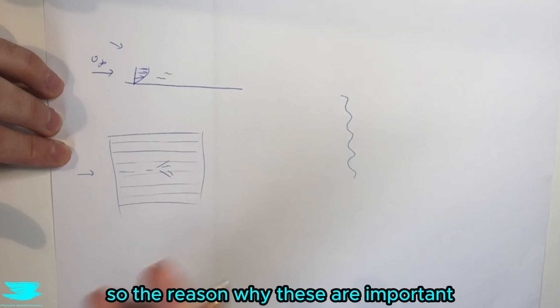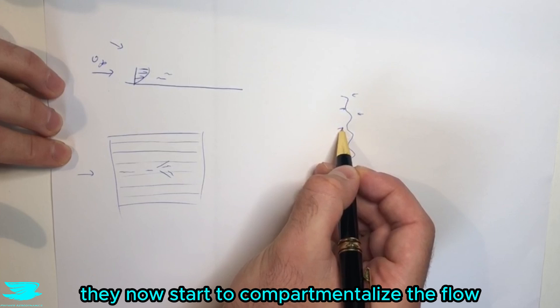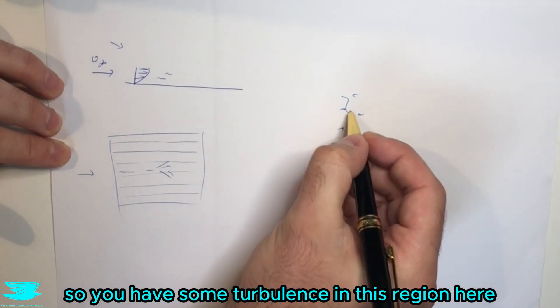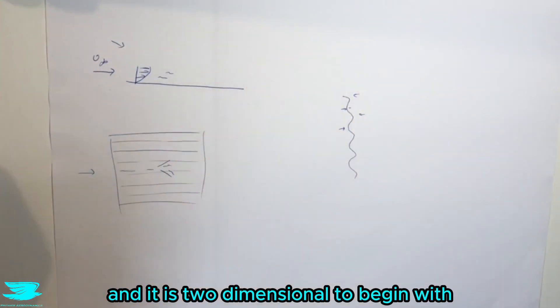So the reason why these are important is because these little troughs and these peaks, they now start to compartmentalize the flow. So you have some turbulence in this region here and it is two-dimensional to begin with and it wants to